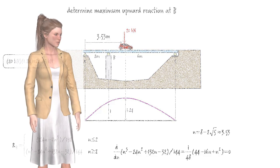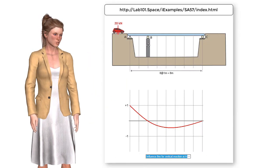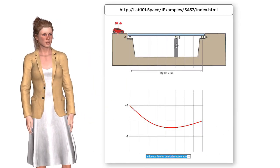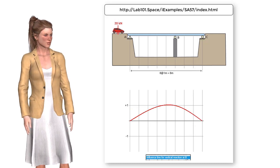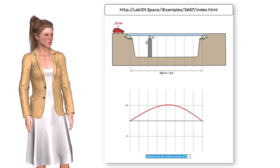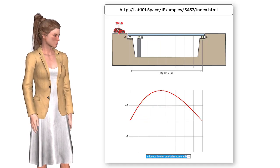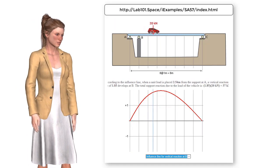If you would like to see how the influence lines change shape as we change the position of the roller support at B, and to observe the effect of a moving load on the reaction forces, go to the interactive web page referenced here.